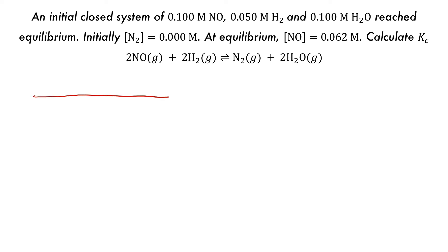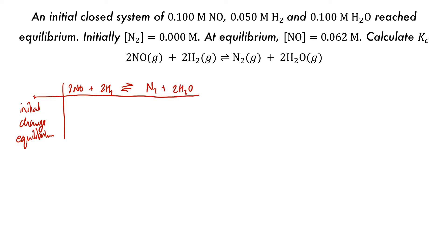We draw out the basic structure with initial, change, and equilibrium rows. At the top we put our equilibrium equation: 2NO plus 2H2 is in equilibrium with N2 plus 2H2O. We fill in the initial concentrations as given. N2 is 0 at the start and H2O is 0.100. The change will be minus 2X for both NO and H2, plus X for N2, and plus 2X for H2O.